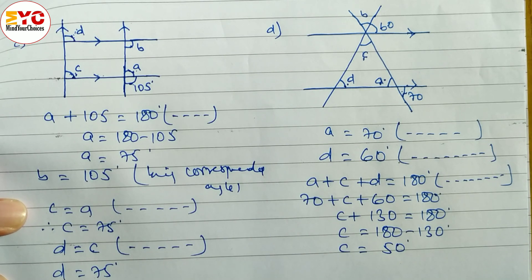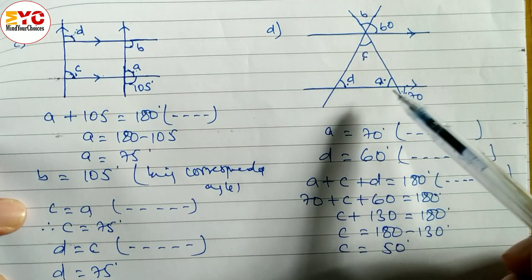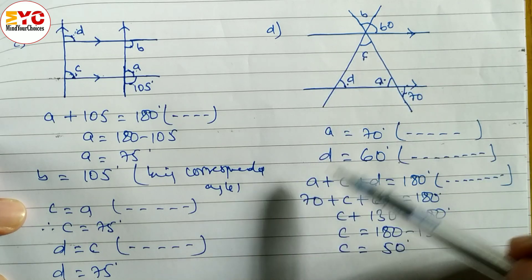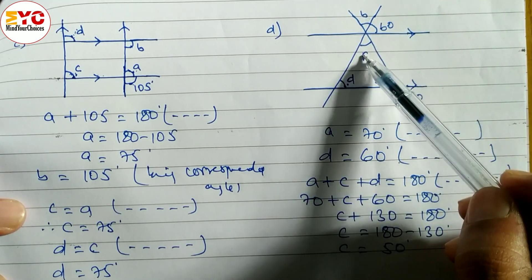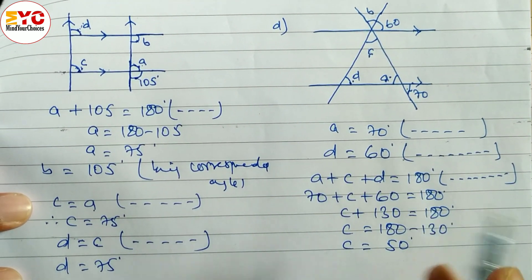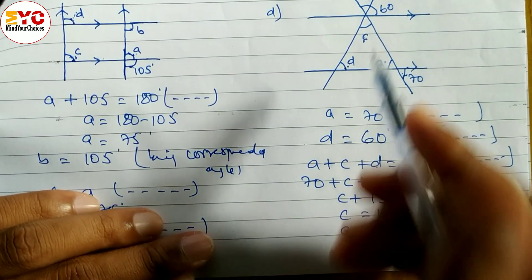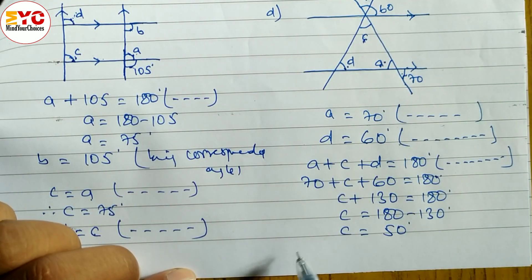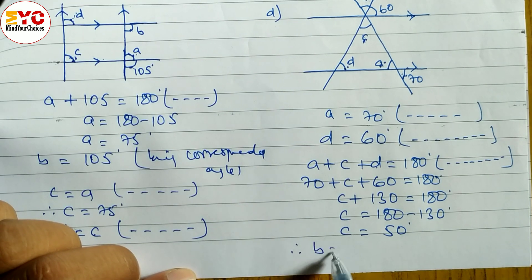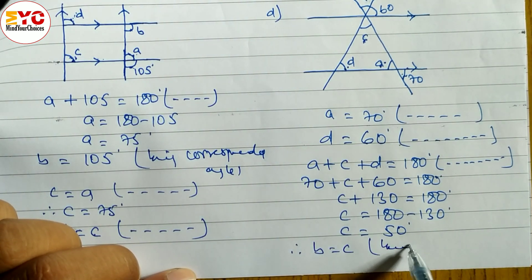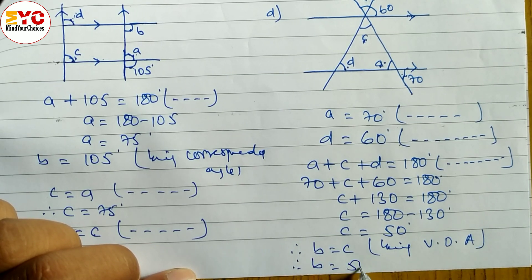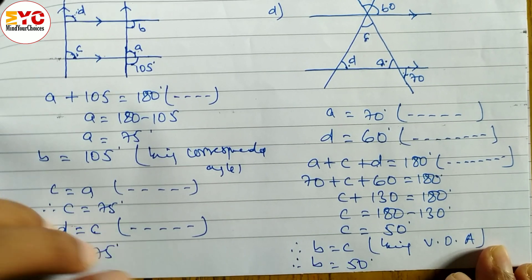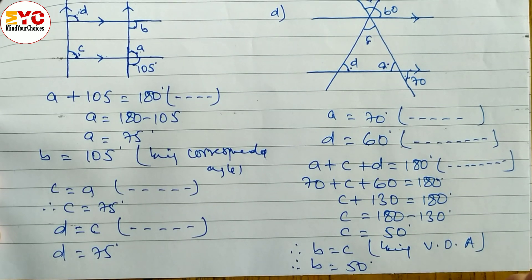Now we have to find out the remaining value b. a we got, d also got, c also got. Now b: b is equal to c. What is the relation of b and c? Vertically opposite angle — sorry, vertically opposite angle, not alternate. Therefore we can write b is equal to c, reason: being vertically opposite angle. So b is equal to 50. Vertically opposite angle.